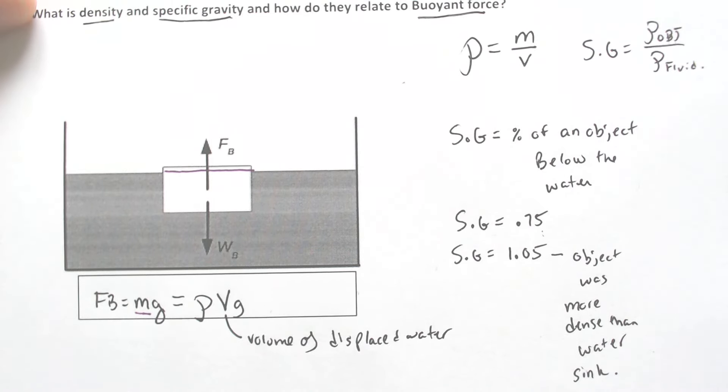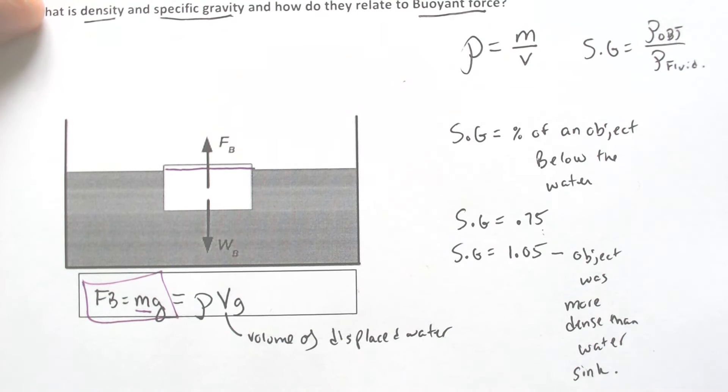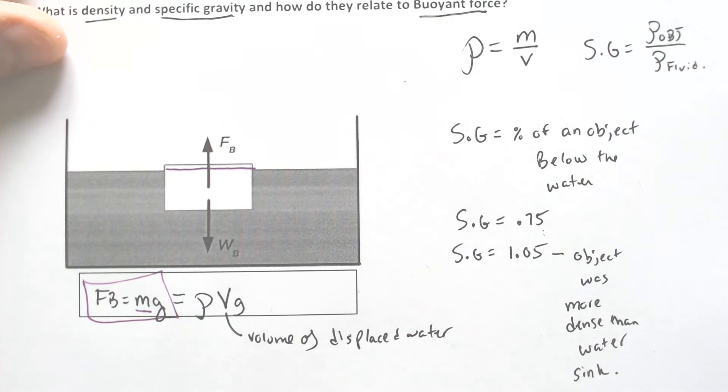But typically, with floating objects, you're going to focus on mg because typically you would know the weight of that object.